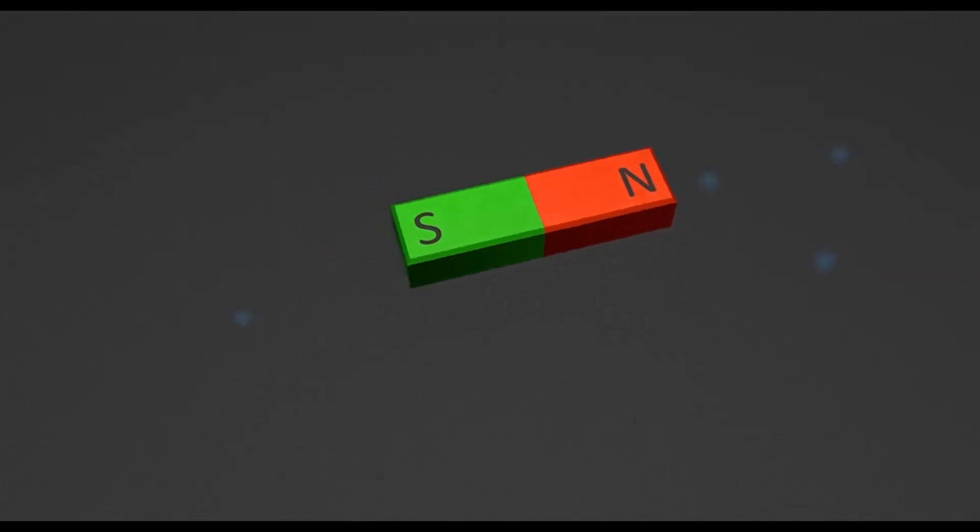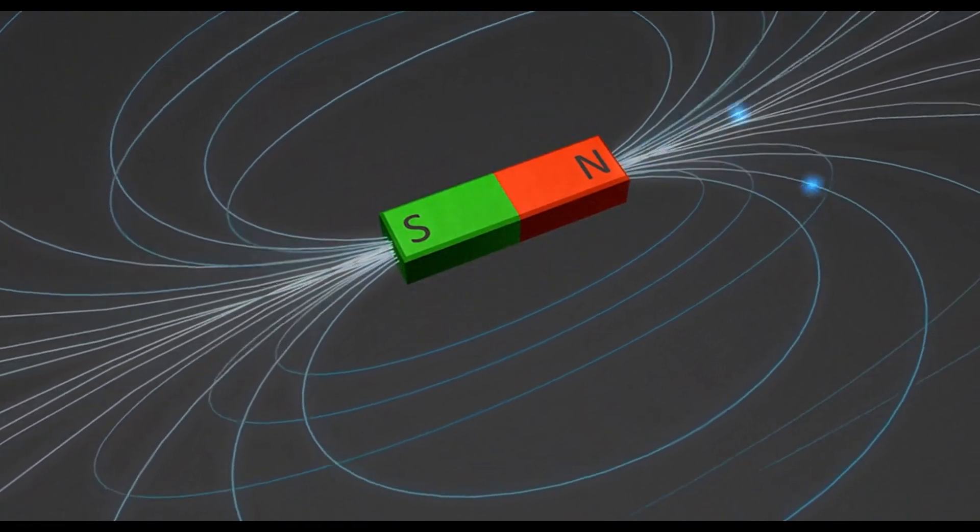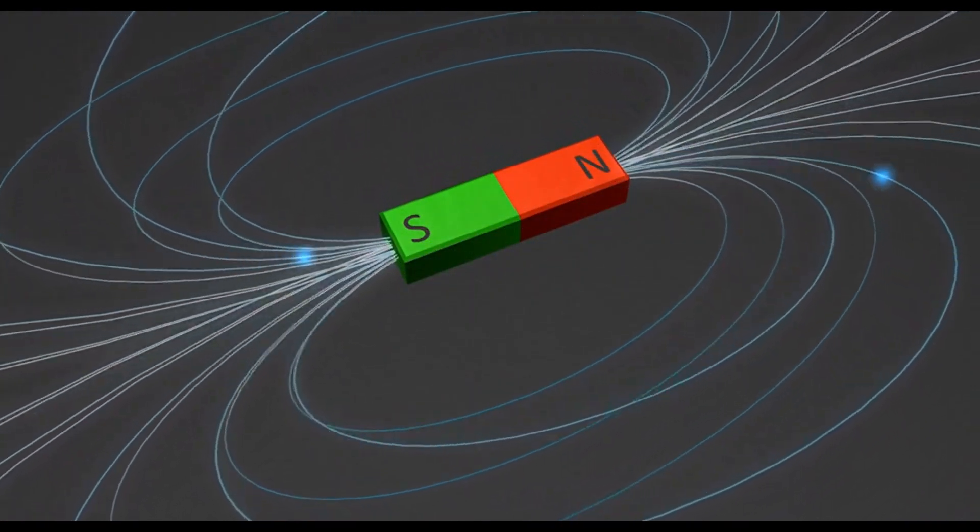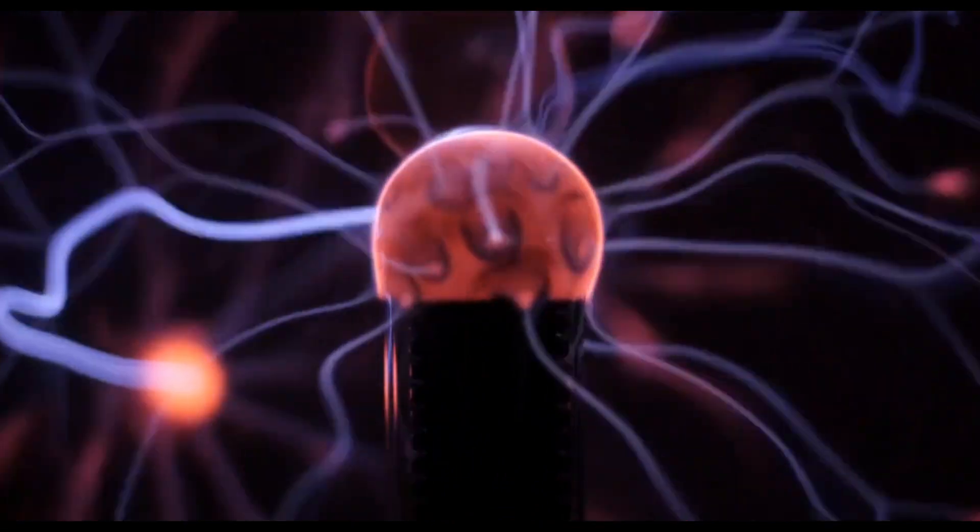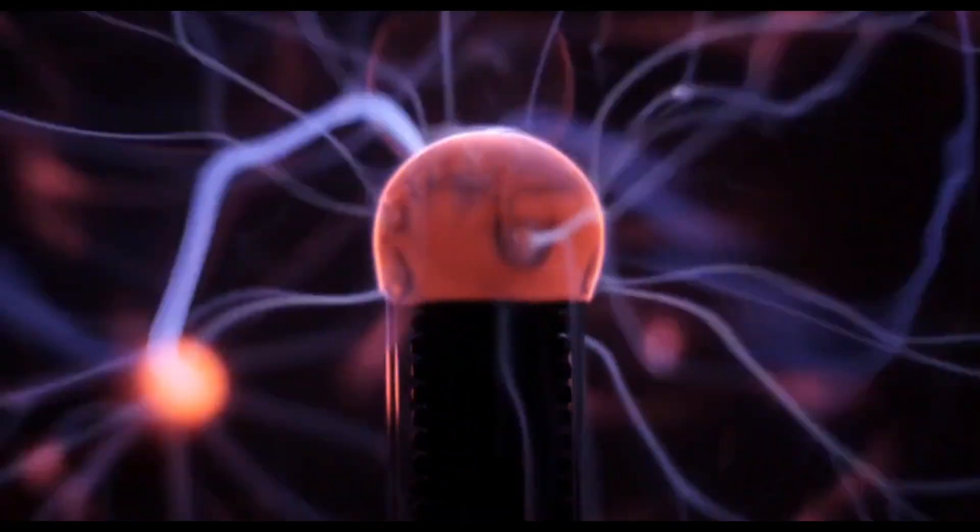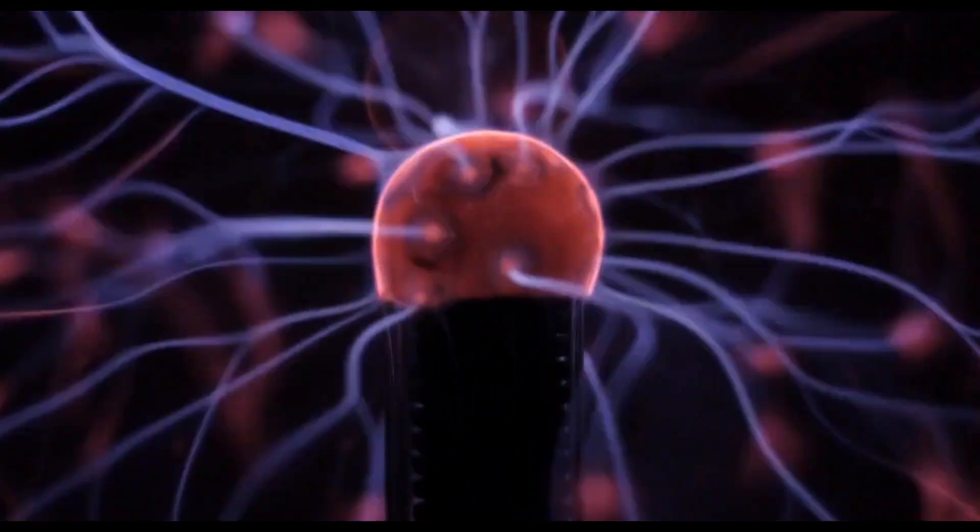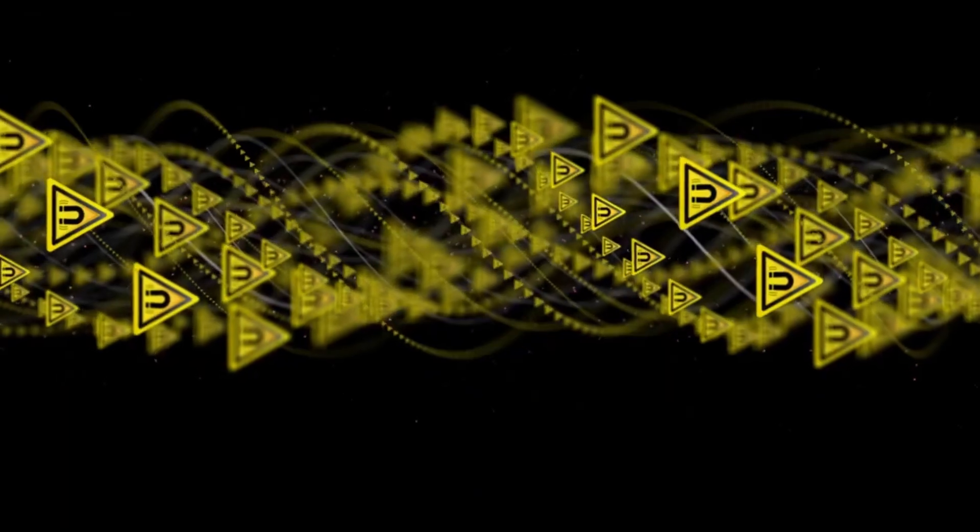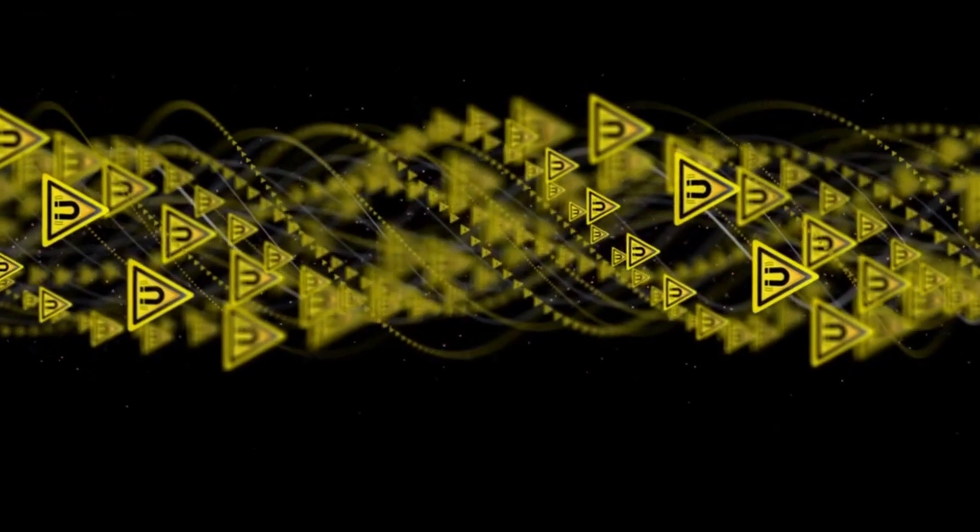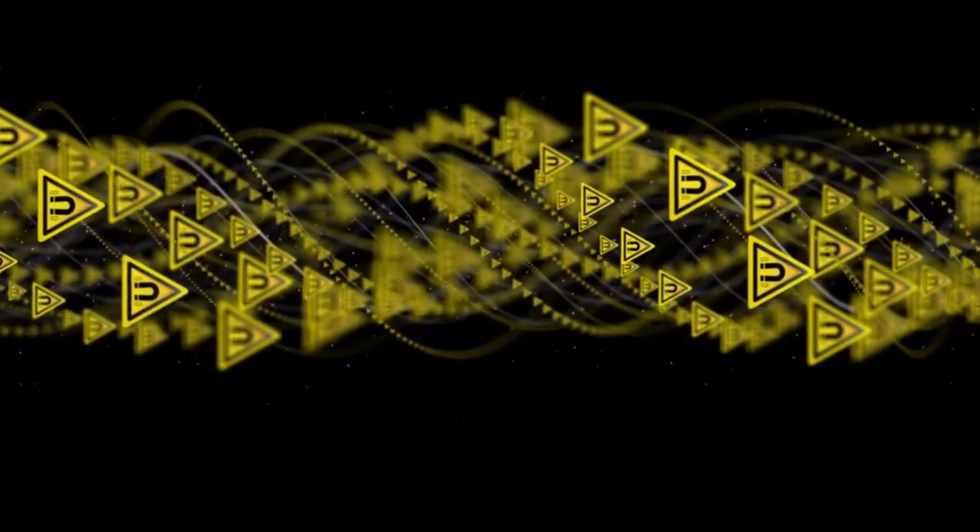One way to infer the spin of subatomic particles is by using magnetic fields. As you may know, moving charges produce magnetic fields. And since subatomic particles are charged, they also produce magnetic fields when they move. But what's interesting is that subatomic particles also produce magnetic fields even when they are not moving. And these magnetic fields are proportional to their spin.